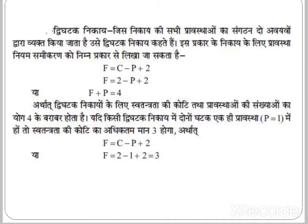Teen ghatak nikaay: jis nikaay ki sabhi awasthaon ko sanggathan do avyavyo dwara vyakt kiya jata hai usse teen ghatak nikaay kehte hain. Is prakar ke nikaay ke liye awastha niyam samikran ko is prakar se likha ja sakta hai: F equals to C minus P plus 2. F varabhar hota hai C ke teen ghatak nikaay ke liye.